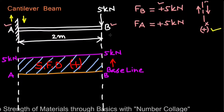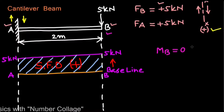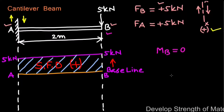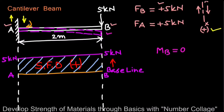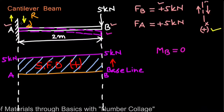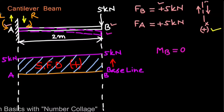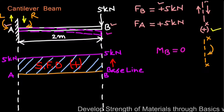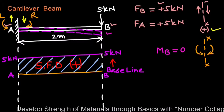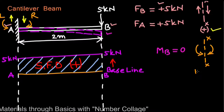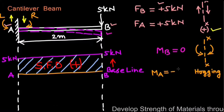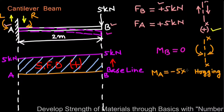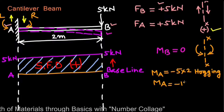For bending moment calculations, the bending moment at the free end MB equals 0. The cantilever bends from point A. The bending moment to the right of point A due to vertical load is clockwise, and anticlockwise to the left — this is hogging and hence negative. So the bending moment at A, MA equals minus 5 kN × 2 m = −10 kN·m.